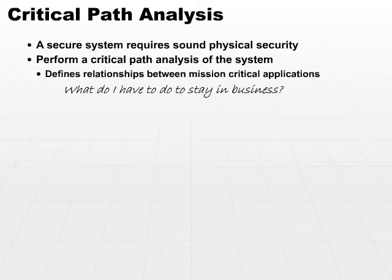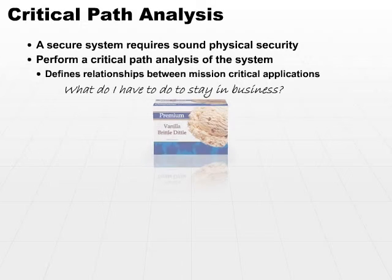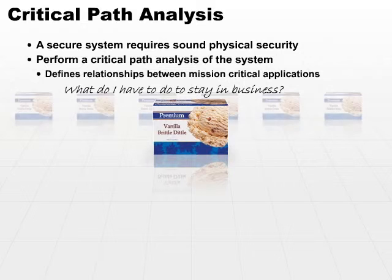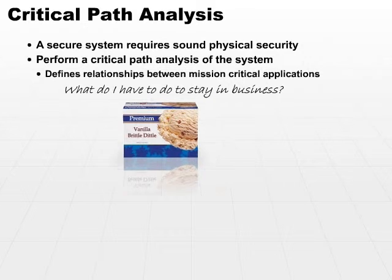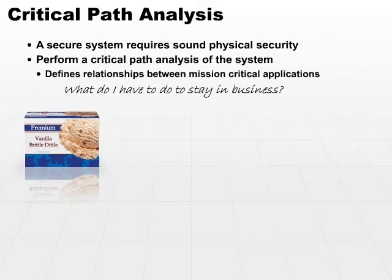Let's say that you are a producer of ice cream. In order to stay in business, you have to produce ice cream. What does it take to produce ice cream? Start at the very end — think of it as an assembly line. If I pick up a box of ice cream and take it back inside the factory, well, we packed the ice cream in the box.